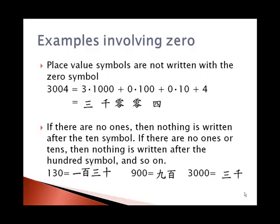When zero is involved, according to an article by Frederick Oy, which I will have you read, the place values are not written with the symbols. So for example, three thousand four. An expanded form would be three times a thousand, plus zero times a hundred, plus zero times ten, plus four. But when we write these, we don't write the symbol for hundred or ten. The symbols are three thousand, zero, zero, four.